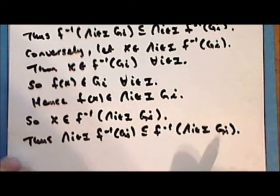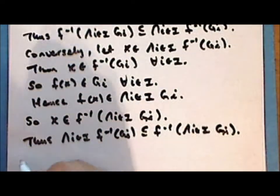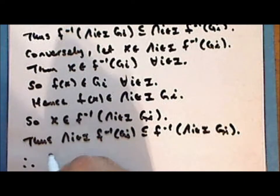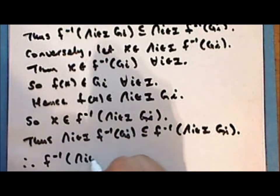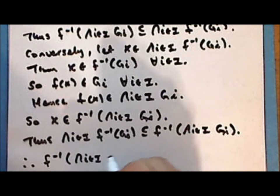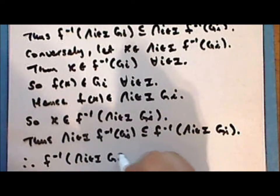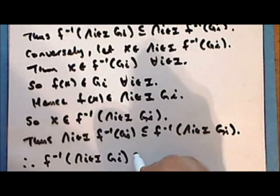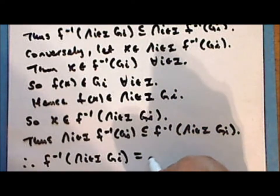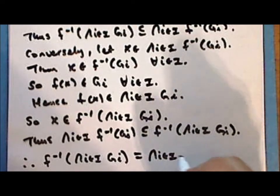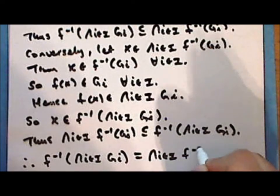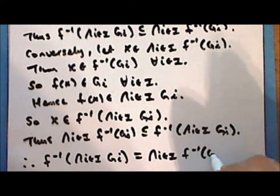So we have demonstrated set inclusion in both directions, and so the two sets are equal. The inverse image of an intersection of subsets of the codomain is equal to the intersection of the inverse images of those sets.